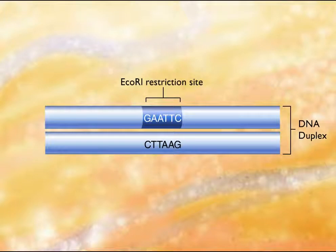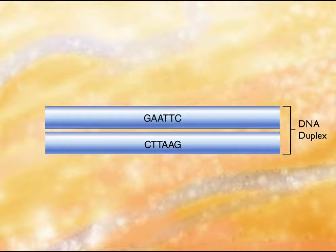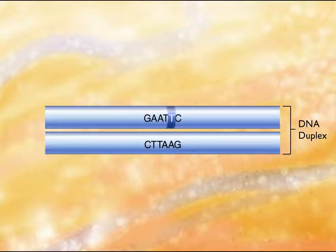The nucleotides at one end of the recognition sequence are often complementary to those at the other end. The two strands of the DNA duplex have the same nucleotide sequence running in opposite directions for the length of the recognition sequence.